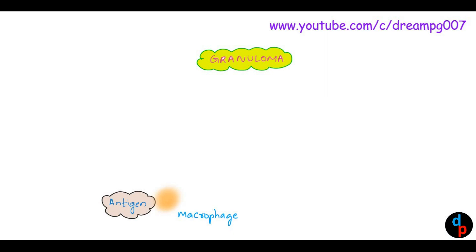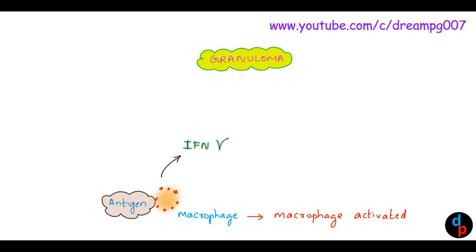This antigen activates the macrophages, which in turn leads to release of a cytokine called interferon gamma. This interferon gamma in turn activates these macrophages to form epithelial-like cells, called epithelioid cells.